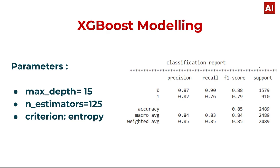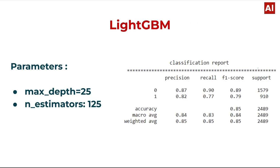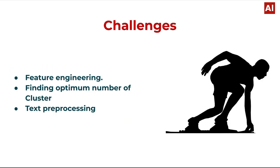Decision tree classification report: overall accuracy is 0.85 for F1 score, with support of 2,489. For LightGBM, parameters are max depth = 25 and n_estimators = 125. The LightGBM classification report for precision, recall, F1 score and support shows a final accuracy of 0.85 and support of 2,489.